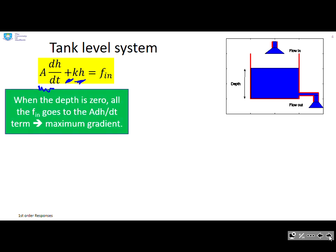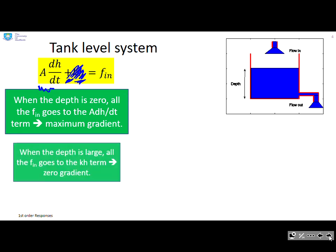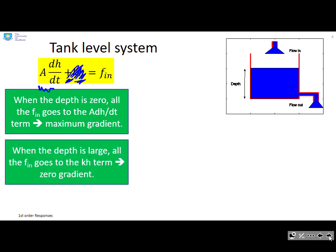So when the depth is zero, this kh term disappears, and so essentially the dh/dt is going to be a maximum. However, as the depth gets deeper, then obviously the kh term gets bigger. And eventually the kh is going to occupy all of the f_in and the dh/dt term will go to zero.